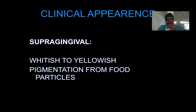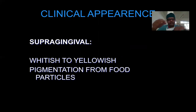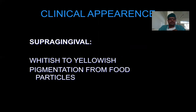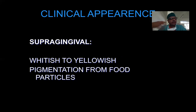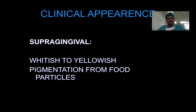How do we identify plaque clinically? The easiest way is clinical evaluation. You ask the patient to rinse out food debris, then use a mouth mirror and probe to retract and check. What you're looking for is a whitish to yellowish pigmentation on the tooth surface — that's supragingival plaque. The color can vary depending on food intake — beetroot gives a reddish color, green vegetables give a greenish tint.